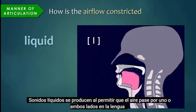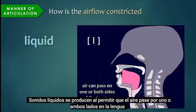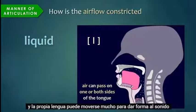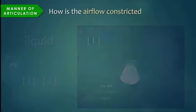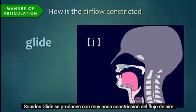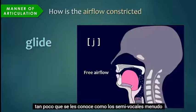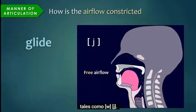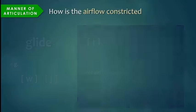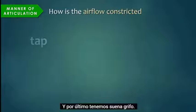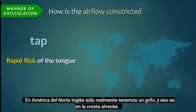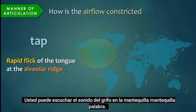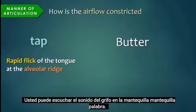Liquid sounds are produced by allowing air to pass by one or both sides of the tongue, and the tongue itself can move a lot to shape the sound, such as l and r. Glide sounds are produced with very little constriction of airflow — so little, in fact, that they are often referred to as semivowels, such as w and y. And finally, we have tap sounds, which involve a rapid flick of the tongue to some place of articulation. In North American English, we only really have one tap, and that's at the alveolar ridge. You can hear the tap sound in the word butter.